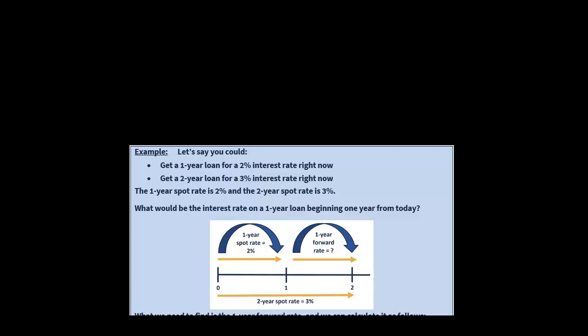But what if you said, look, I'm interested in a one-year loan, but starting one year from today? So let's say this is today — time zero. I don't want this one-year loan to begin today; I want it to begin one year from now, and extend for a year from there. So it's a one-year loan that doesn't begin today, meaning I'm not going to get the 2% spot rate. How do we calculate this forward rate? Well, we can use the spot rates we have — 2% for the one-year and 3% for the two-year — to piece together the implied forward rate.